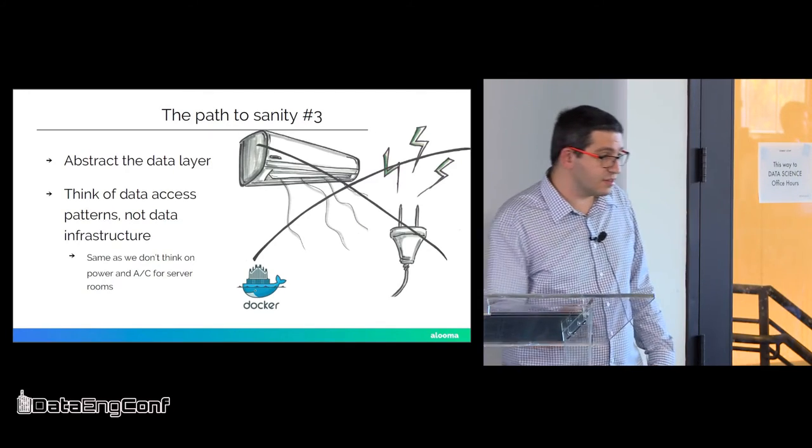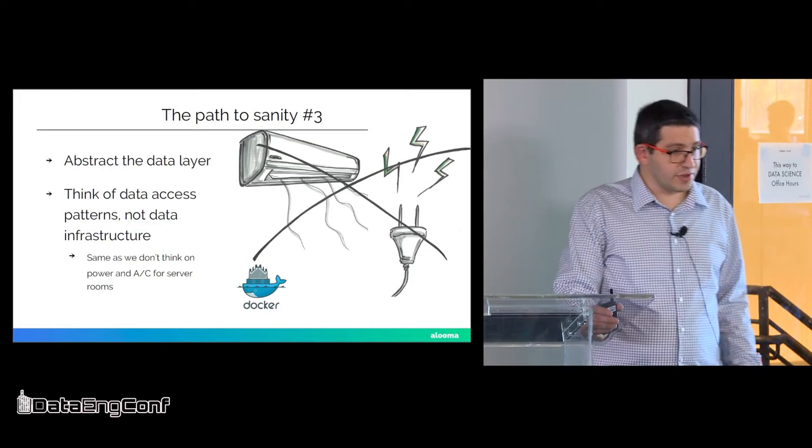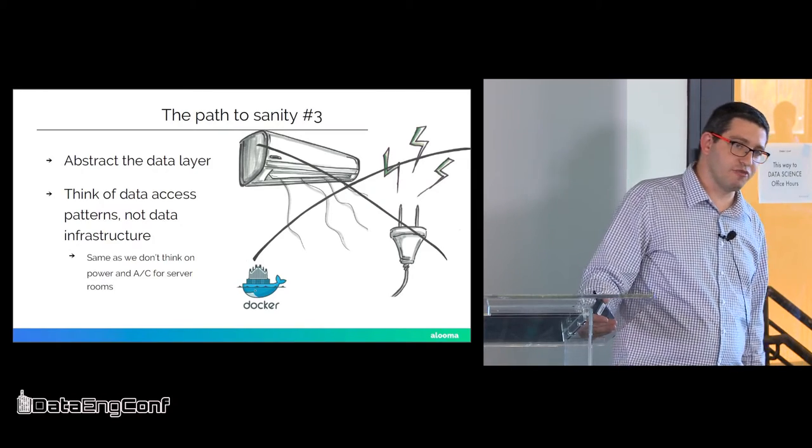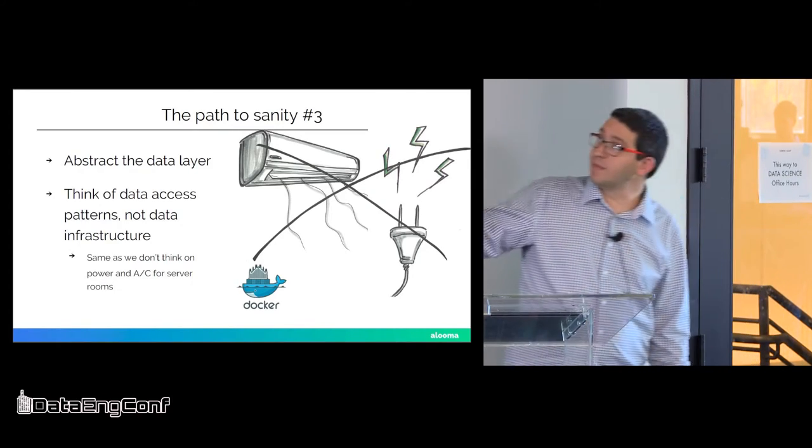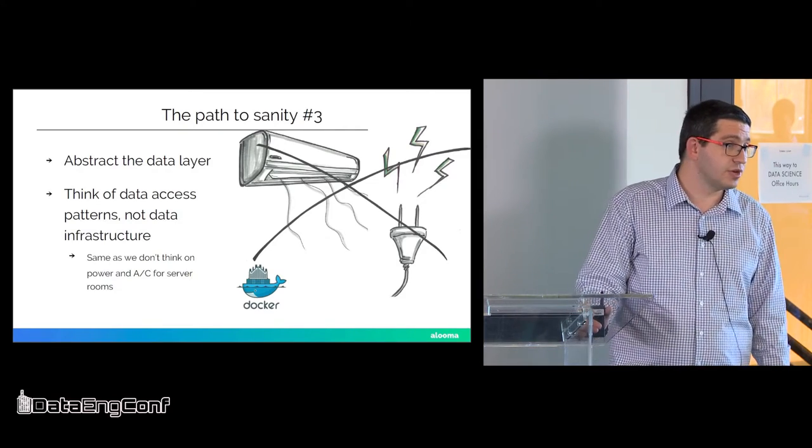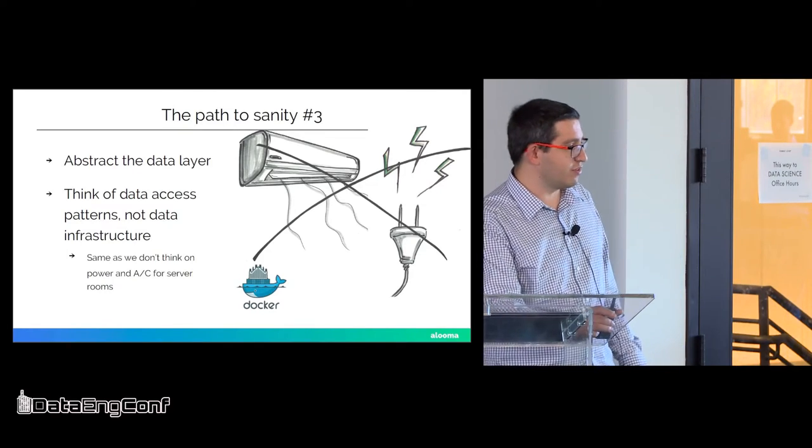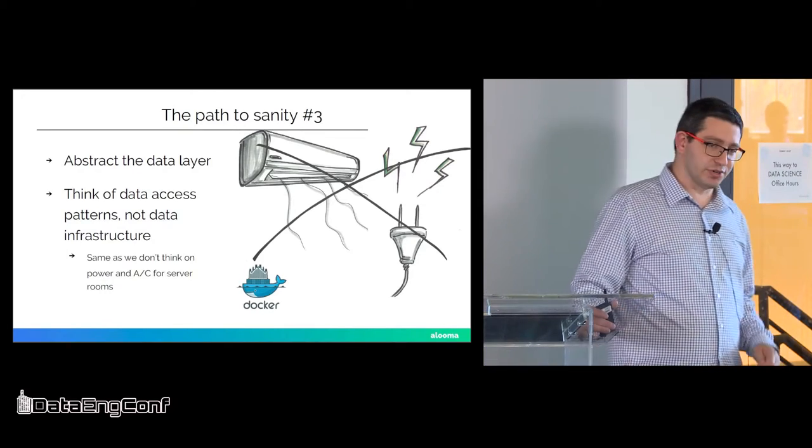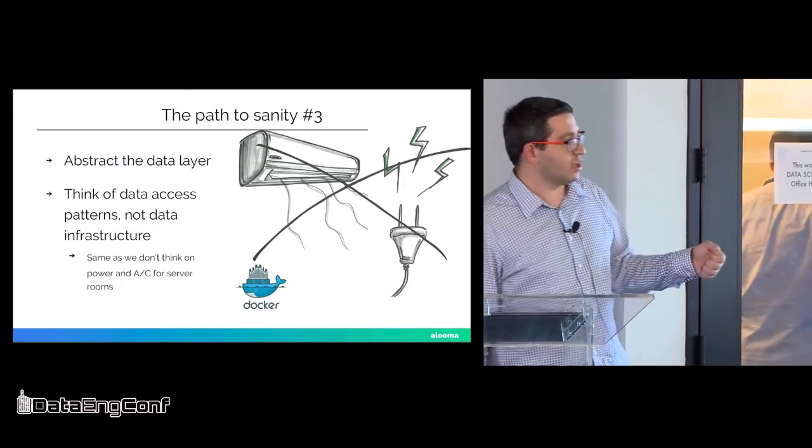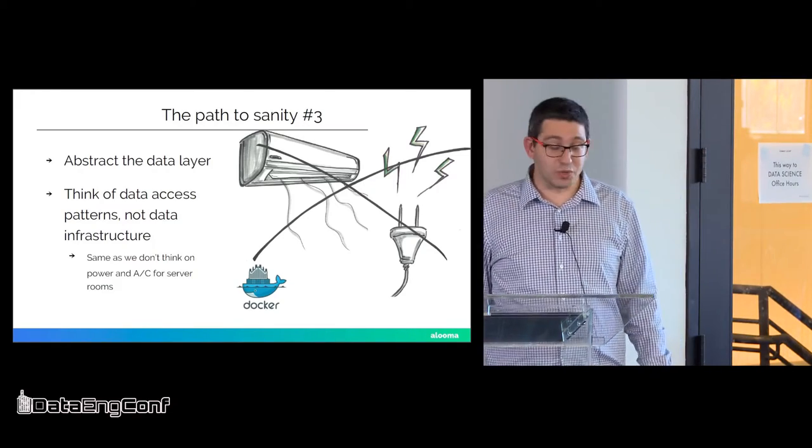All right. Then the third path to sanity, and I think this is the most important piece, is to abstract the data layer. And 15 years ago, when we wanted to start a software company, the first thing we had to take care of is a server room, and power and cooling. And we had to worry about how much power we have in the server room. In fact, when I was in the military, our biggest problem with every project we did was that the server room did not have enough power. Every time we tried to put our server there anyway, because they needed it, the power would fail. And then the generator would kick in. And then people would get pissed.